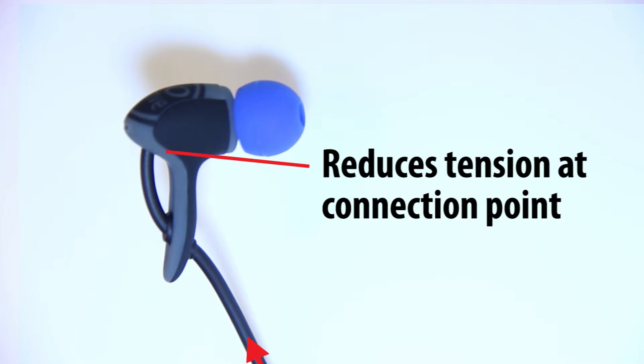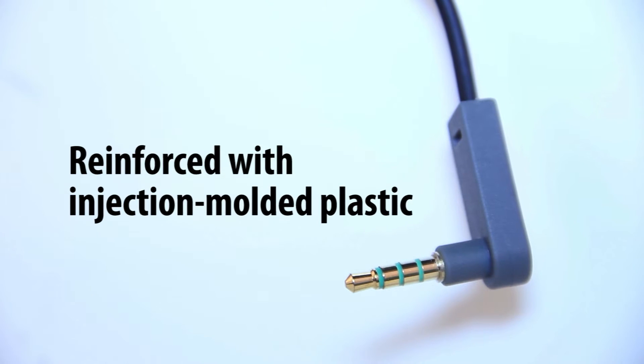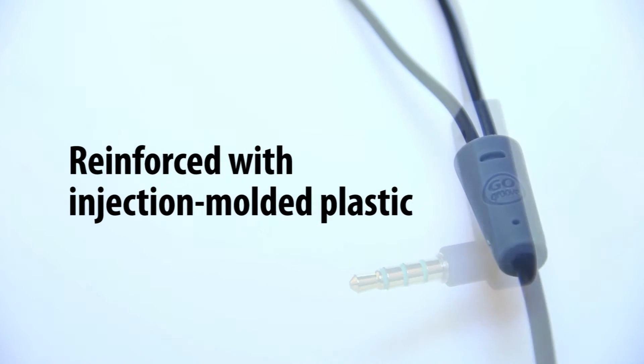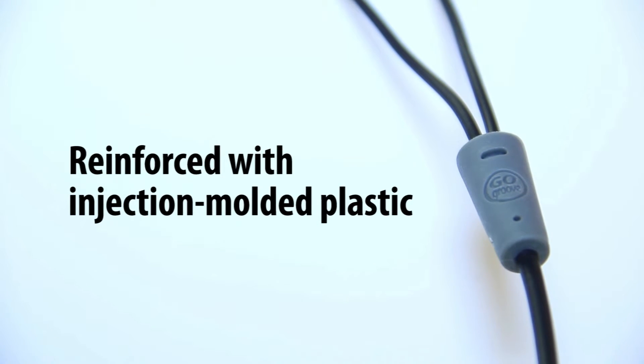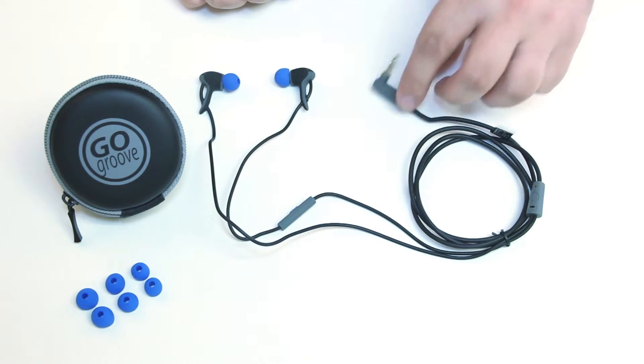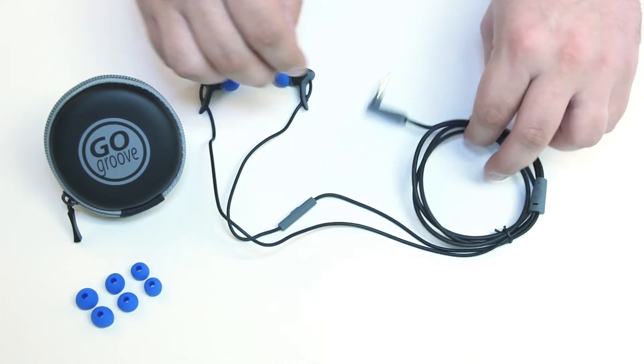Earbud housing features a cable through design that reduces tension at the connection point. All cable connections including the audio plug and the Y connector have been reinforced with injection molded plastic and the cabling is much thicker than normal at three millimeters.